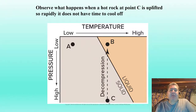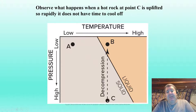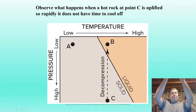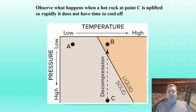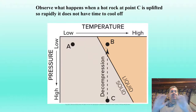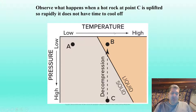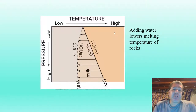If we take a rock from point C and uplift it very rapidly so it doesn't have time to cool off, we get what's called decompression melting. We don't reduce the temperature — we just reduce the pressure on top of it by thrusting it up. Simply doing that causes it to melt. This is what we see at divergent margins: as things pull apart, our lithosphere is thinnest and weakest there, and the asthenosphere rises up into that spreading center, decompresses, and melts.